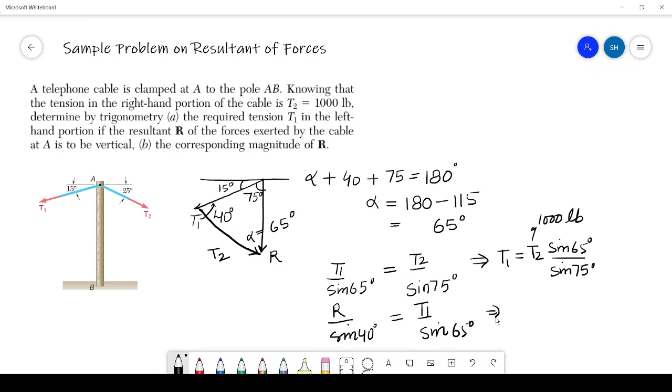So this will be equals to T1, T1 sine of 40 degrees divided by sine of 65 degrees. So when we solve we need to put the value and then you can find the solution.